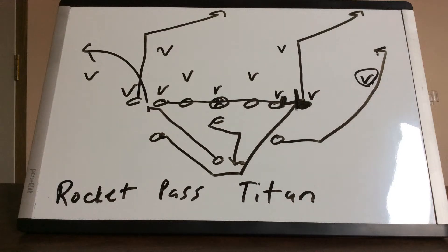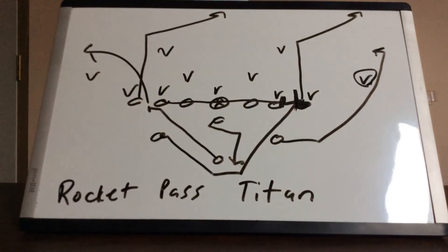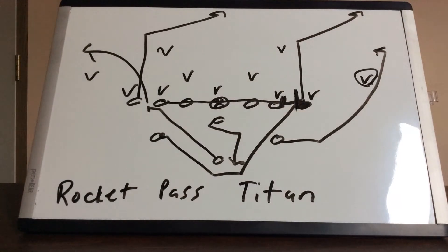Dr. Sella here. Rocket Pass Titan is a great way to take advantage of an overactive cornerback, because what happens is he's going to fly up and then you're going to run the corner route where he's supposed to be.